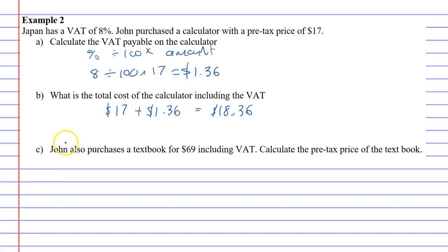Moving on to question C. John also purchases a textbook for $69 and this includes the VAT. It wants you to calculate the pre-tax price of the textbook. So once again, this is one of those questions where you use four boxes. So here's our four boxes now. We've got the $69, let's put that here.